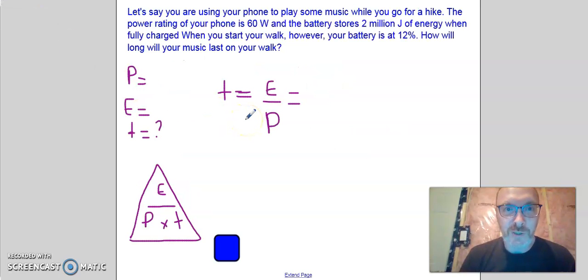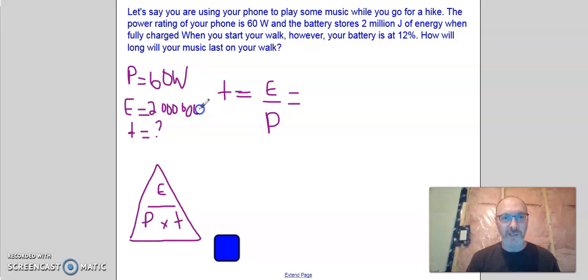Again, joule is a unit of energy here. Let's jump to this question. Let's say you're using your phone to play some music while you go for a hike. The power rating of your phone is 60 watts. And the battery stores 2,000,000 joules of energy when fully charged. When you start your walk, however, your battery is at 12%. How long will your music last on your walk? So, again, we're given pieces of information that we have to write down here on the side. We're asked for time. Because we want to know how long the music is going to last. We're told that the power rating is 60 watts. And we're told that the energy is 2,000,000 joules of energy stored. But your battery is at 12%. So we'll consider that once we write our information into our formula.